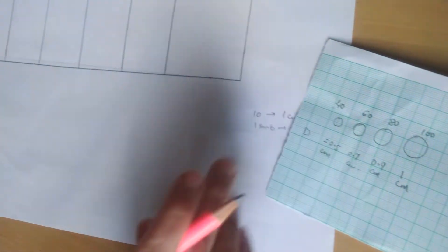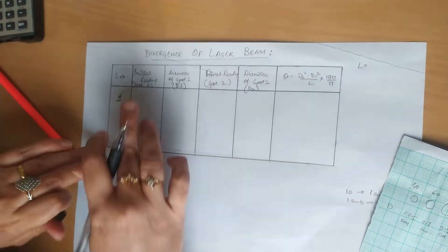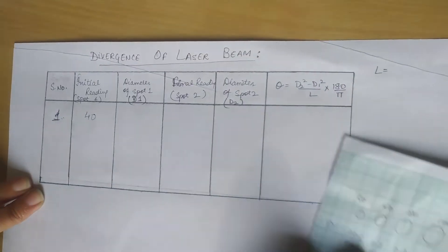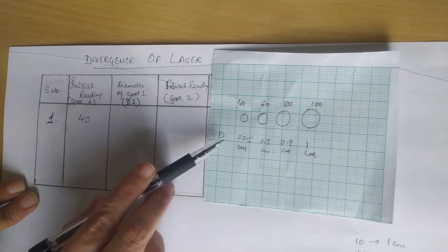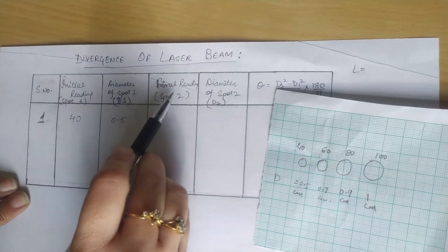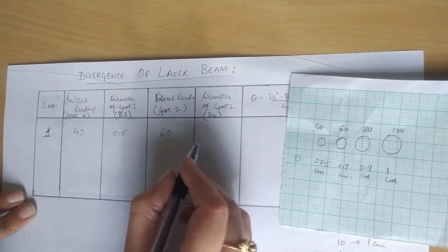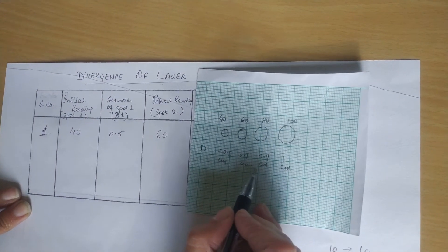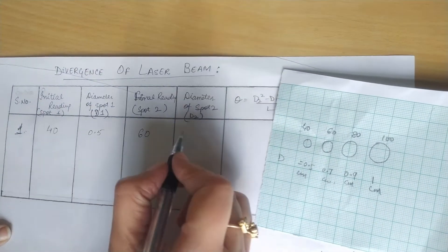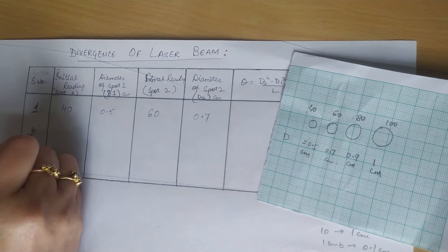Now moving towards our reading section. Initial position of spot 1 was at 40 cm, and from our observations the diameter is 0.5 cm. Final reading, we will consider 60 as final reading, and diameter of spot 2 is 0.7 cm. This is in cm.